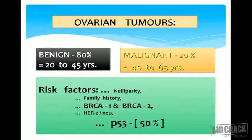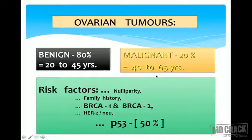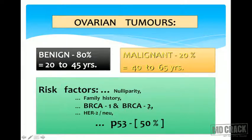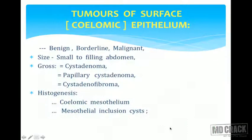Remember: 80% of ovarian tumors are benign. Most common are surface epithelial tumors, usually seen in the reproductive age group, whereas malignant tumors are more common in the 40-64 age group. Around 20% of tumors are malignant. Risk factors for ovarian tumors include nulliparity due to hyperestrogenic status, family history, BRCA1 and BRCA2 mutations — especially BRCA2 — HER2/neu mutations, and p53 mutation in 50% of cases.